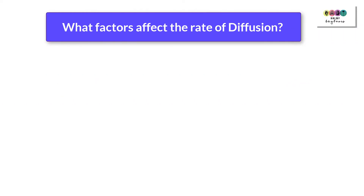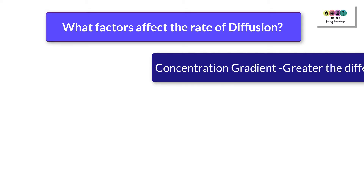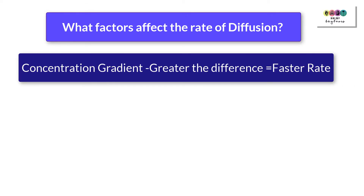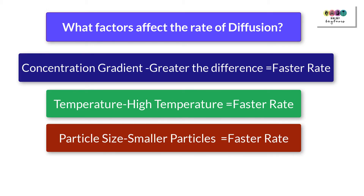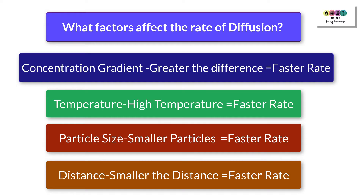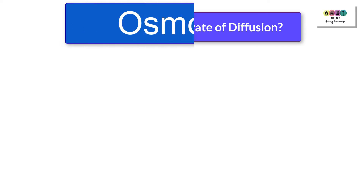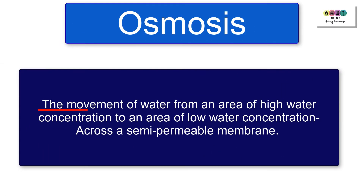What factors affect the rate of diffusion? Firstly, concentration gradient — the greater the difference in concentrations, the faster diffusion will take place. Temperature — the higher the temperature, the faster diffusion occurs. Particle size — smaller particles mean a faster rate of diffusion. And distance — the shorter the distance, the faster the rate of diffusion.